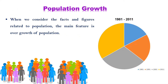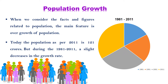Population Growth. When we consider the facts and figures related to population, the main feature is overgrowth of population. Today, the population as per 2011 is 121 crores. But during the year 1881 and 2011, there has been a slight decrease in the growth rate.